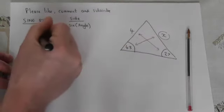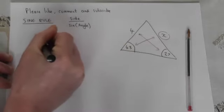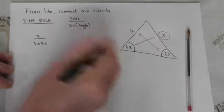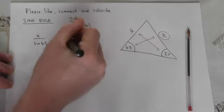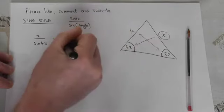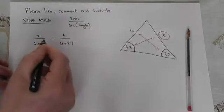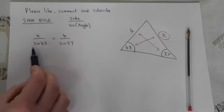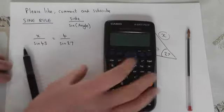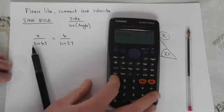is the unknown side over sine of its known angle opposite equals the known side over sine of its opposite angle. We can then find out X quite easily. So first of all we calculate 4 divided by sine 27.